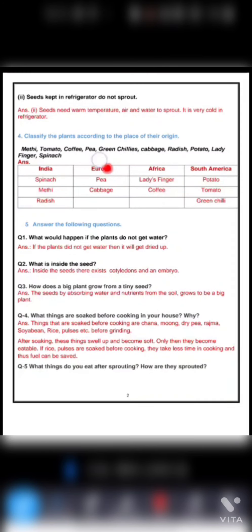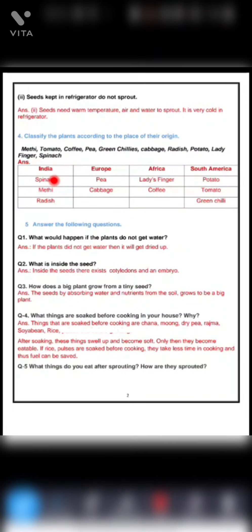Pea belongs to Europe. Green chili belongs to South America. Cabbage belongs to Europe. Radish belongs to India. Potato belongs to South America. Ladyfinger belongs to Africa and spinach belongs to India. So like this you have to arrange them according to their origin.